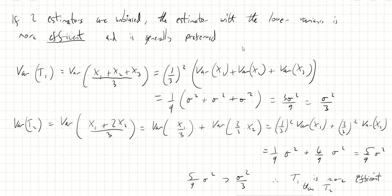So there we go. An unbiased estimator has its expectation equal to the parameter it's estimating, and the lower the variance of our estimator, the more efficient it is.